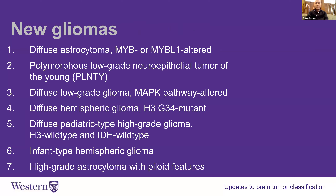There's another tumor type called a PLENTY — you can see the long name for it. Again, if you have this, that's a good thing. We need to be able to recognize who has this and not treat them as if they have a high-grade glioma, because these tumors are very slow-growing and just need to be watched. There are also tumor types with MAP kinase pathway alterations, for which we now have special targeted chemotherapy — an exciting time where we're discovering new treatments that can slow down and reverse the growth of brain tumors.